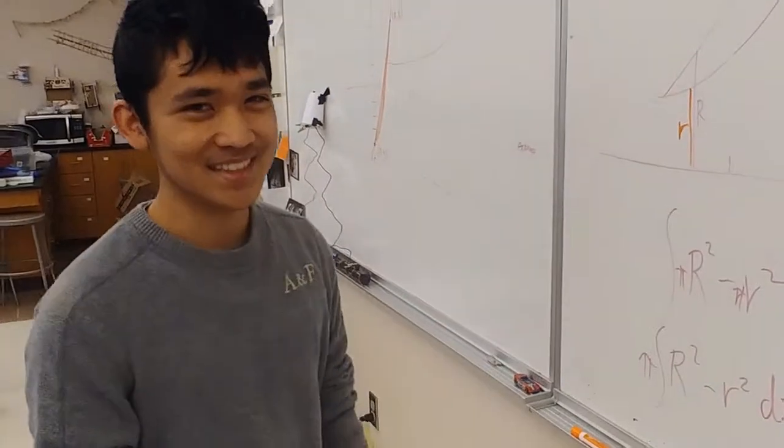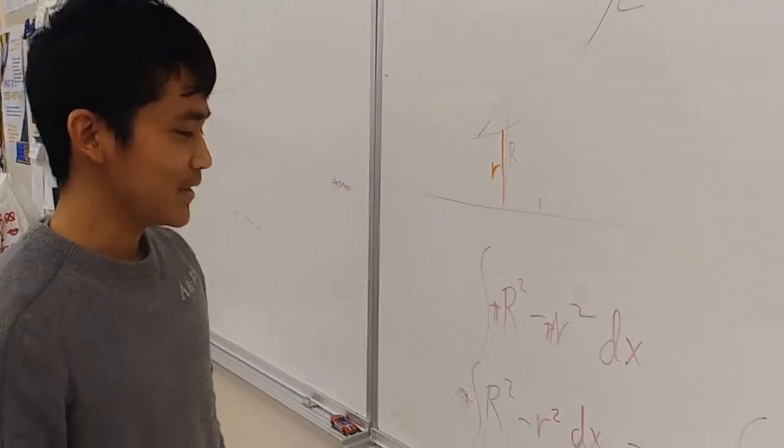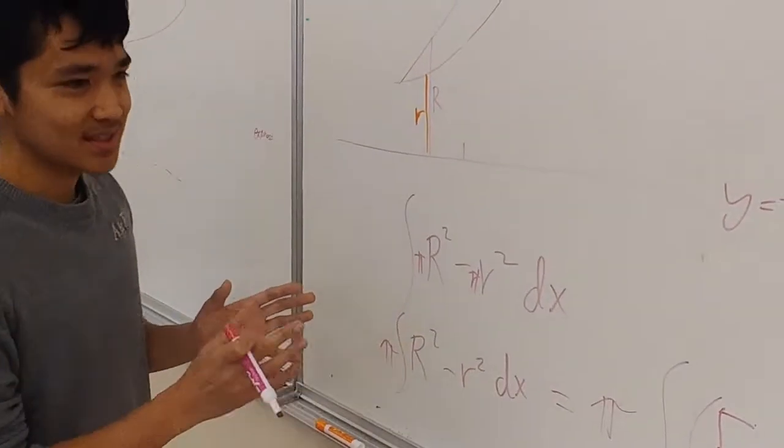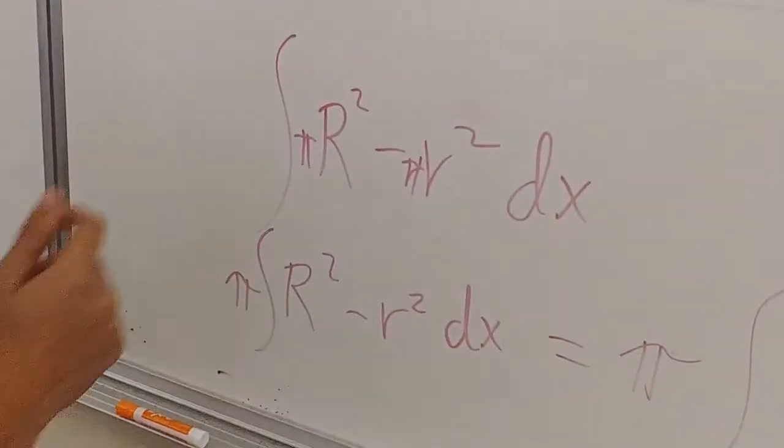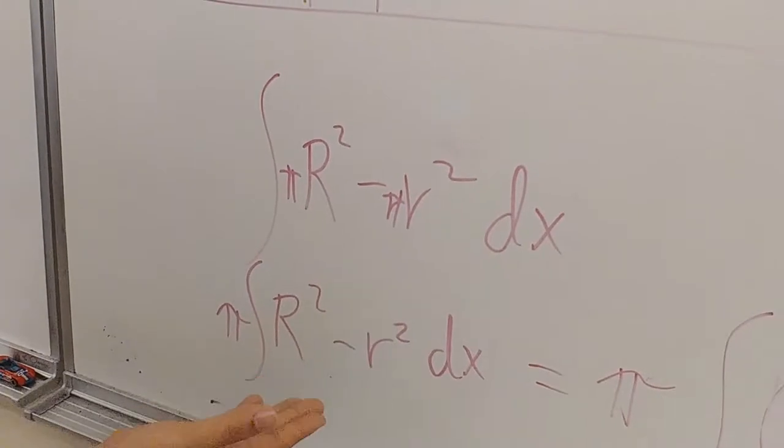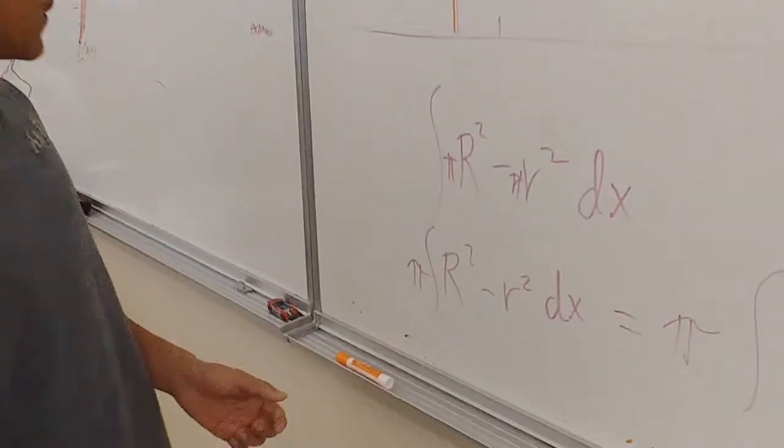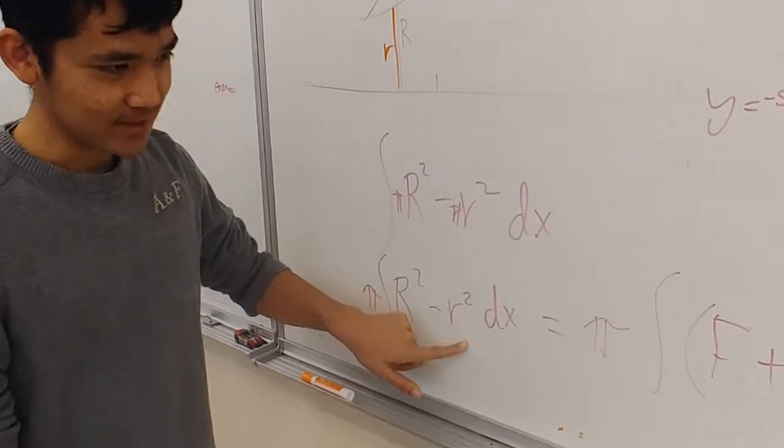To do the washer method, we're going to be taking a big circle and taking away a small circle from it. We're going to be using the integral of pi R squared minus pi r squared, but the hard part is going to be finding a way to express big radius and little radius.